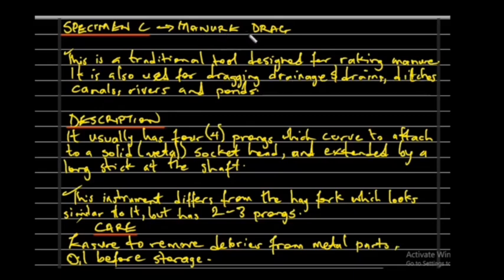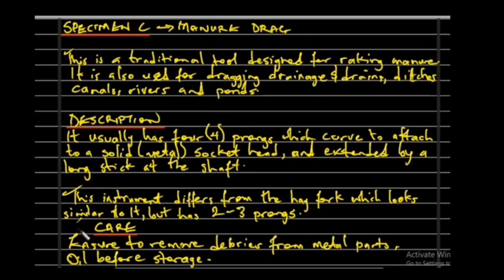Specimen C is the manual drag. Traditionally it is a tool designed for raking manure, but it has been introduced to other uses such as dragging drainage in ditches, canals, rivers, and ponds. It is usually produced with four prongs attached to a single solid metal socket head, extended by a long shaft. It differs from the hay fork, which looks similar but has only two to three prongs.